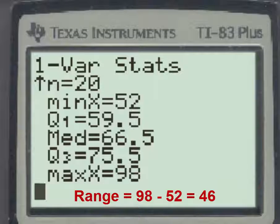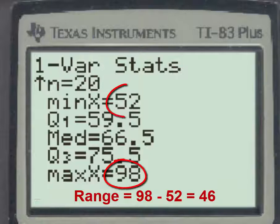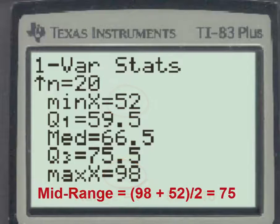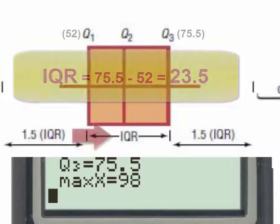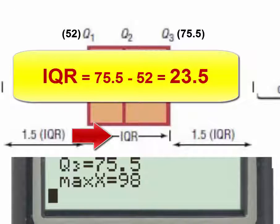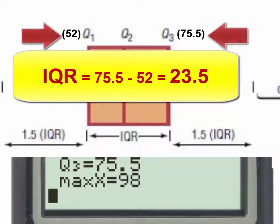The range of the data we could find by subtracting the maximum minus the minimum, and the mid-range we would find by finding the average of the maximum and minimum. To find the interquartile range or the IQR, we would subtract Q3 minus Q1.